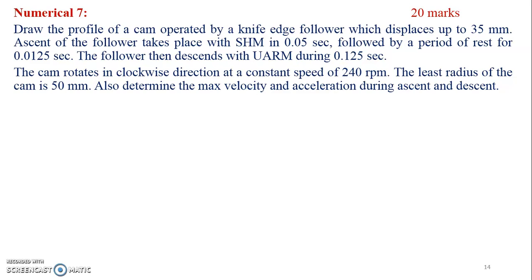Today, for the April 28th class, we have solved numerical number 7, which is a little bit different. This is usually asked for 20 marks. The question is: draw the profile of a cam operated by a knife edge follower which displaces up to 35 mm. Ascent of the follower takes place with simple harmonic motion in 0.05 seconds, followed by a period of rest for 0.0125 seconds. The follower then descends with UARM during 0.125 seconds. The cam rotates clockwise at 240 rpm. The least radius of the cam is 50 mm. Also determine the maximum velocity and acceleration during ascent and descent.